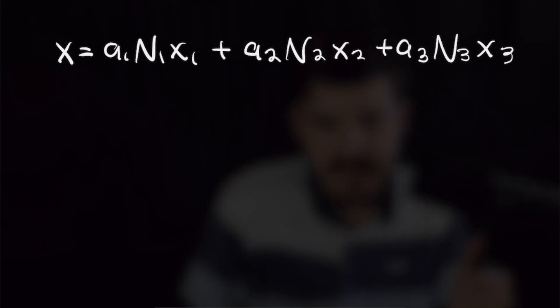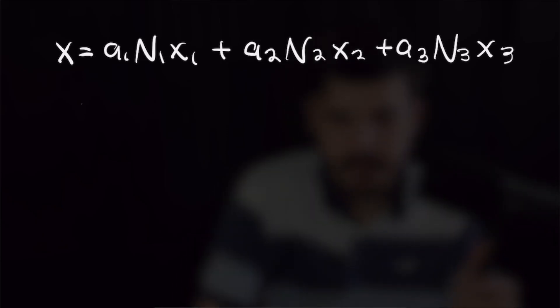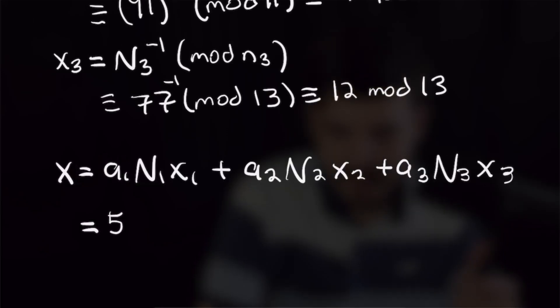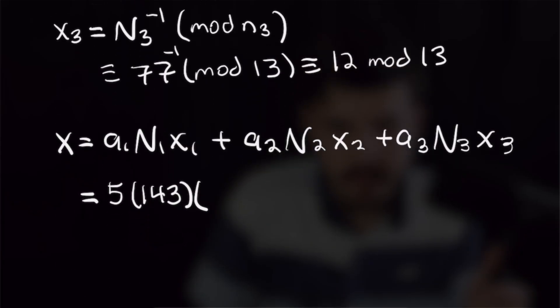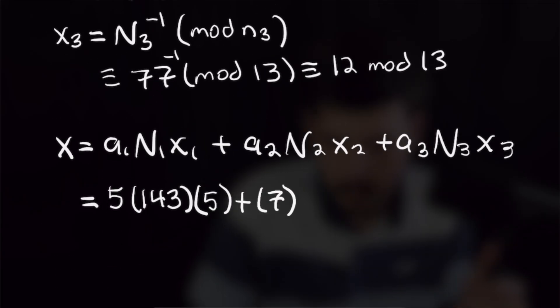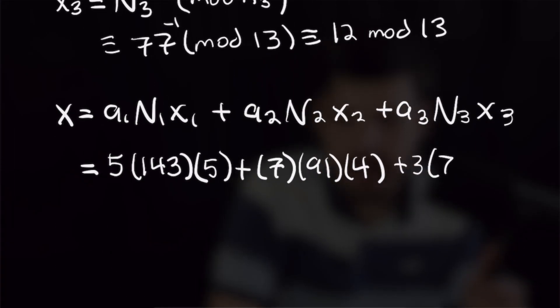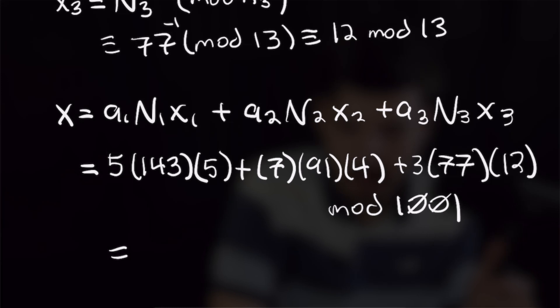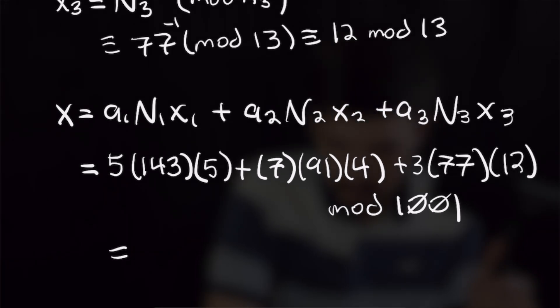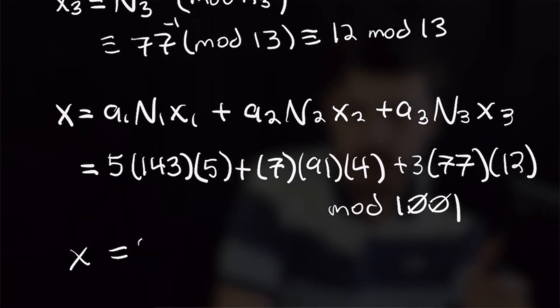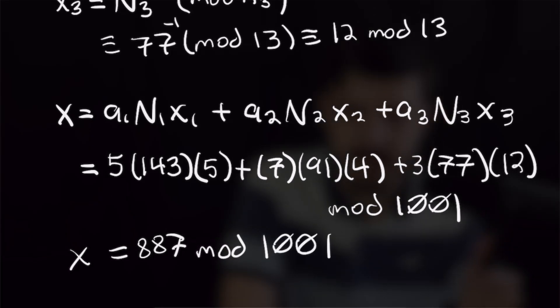Now all we need to do is plug all these values into our equation for CRT, which is x equals a sub 1 times big n sub 1 times x sub 1 plus a sub 2 times big n sub 2 times x sub 2 plus a sub 3 times big n sub 3 times x sub 3. Plugging in all those values, we will have 5 times 143 times 5 plus 7 times 91 times 4 plus 3 times 77 times 12, and we will reduce that all mod big N, which is 1001. When we multiply and add all those out and reduce mod 1001, we will have that x is congruent to 887 mod 1001, and that is our final answer.